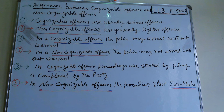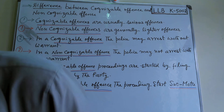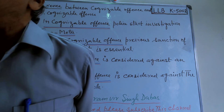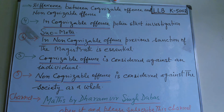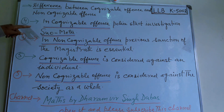Fourth point of difference: in a cognizable offense, police start investigation suo motu, on their own, without requiring prior permission. In a non-cognizable offense, the previous sanction of the magistrate is essential before investigation can begin. This is the fourth difference between cognizable and non-cognizable offenses.